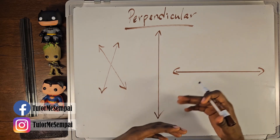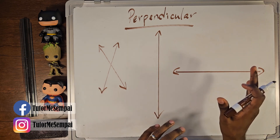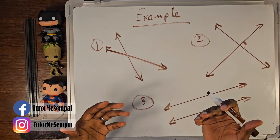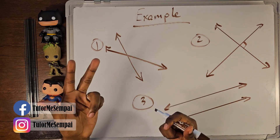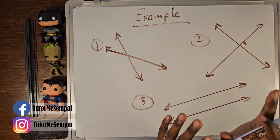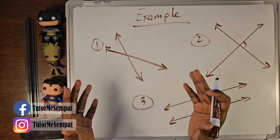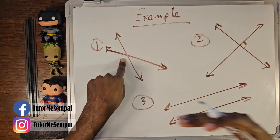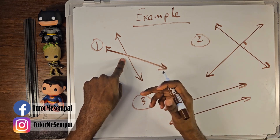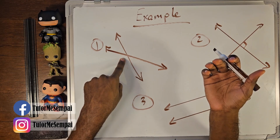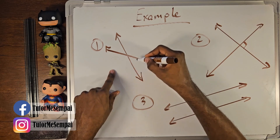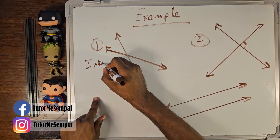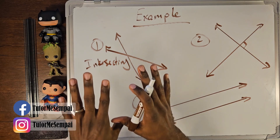Now let's cover a few examples. For the first pair, ask yourself: will they ever touch? They are actually touching right now, so they're definitely not parallel. But are they perpendicular or just intersecting? This pair doesn't give us that straight look where we'd get a 90 degree angle, so this is just intersecting.